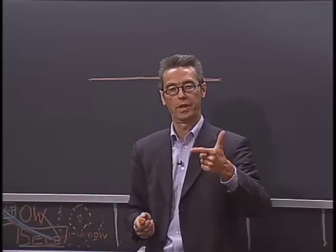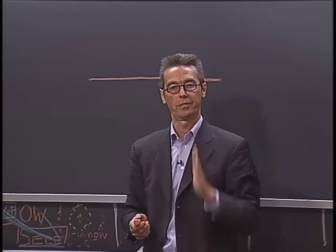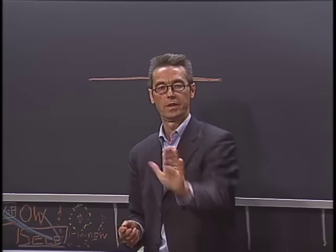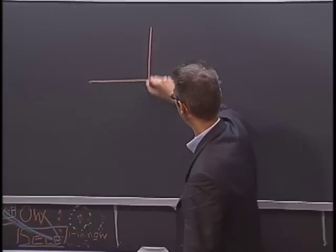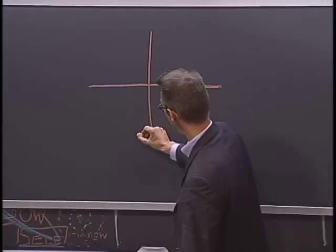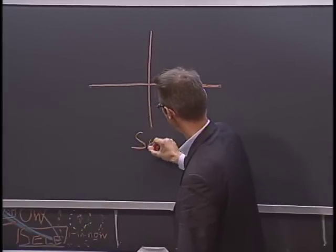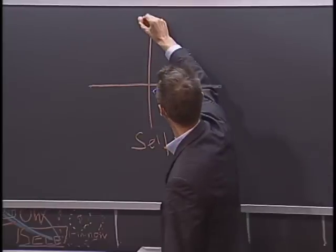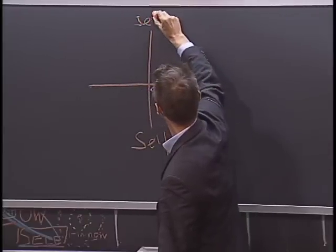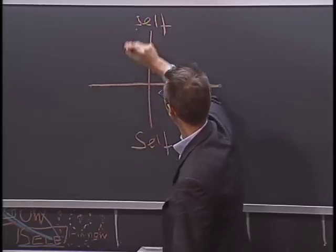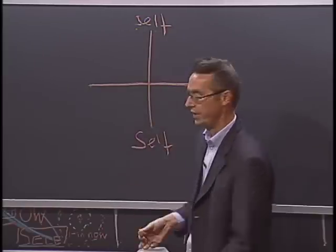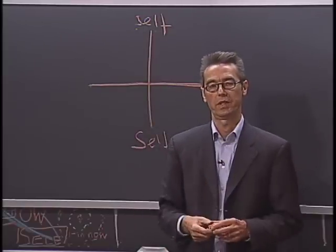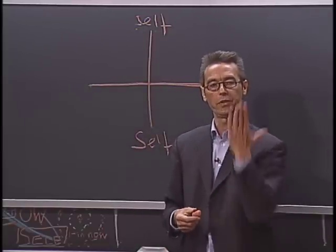The second one is the vertical connection. What is the vertical connection about? The vertical connection is about connecting the normal small-s self, my current self, with the capital-S Self, which is my highest future possibility.